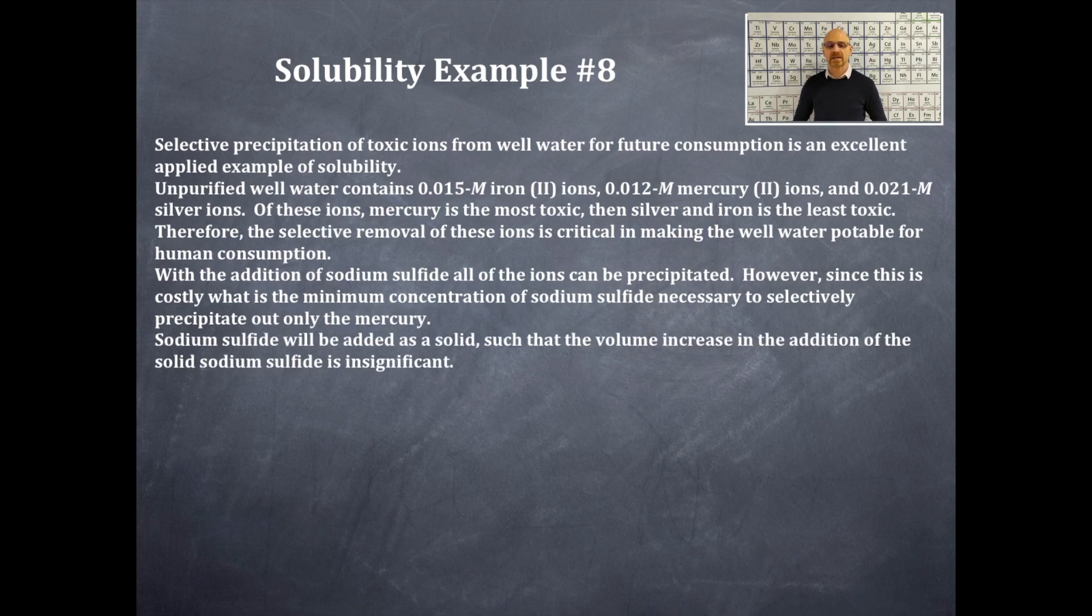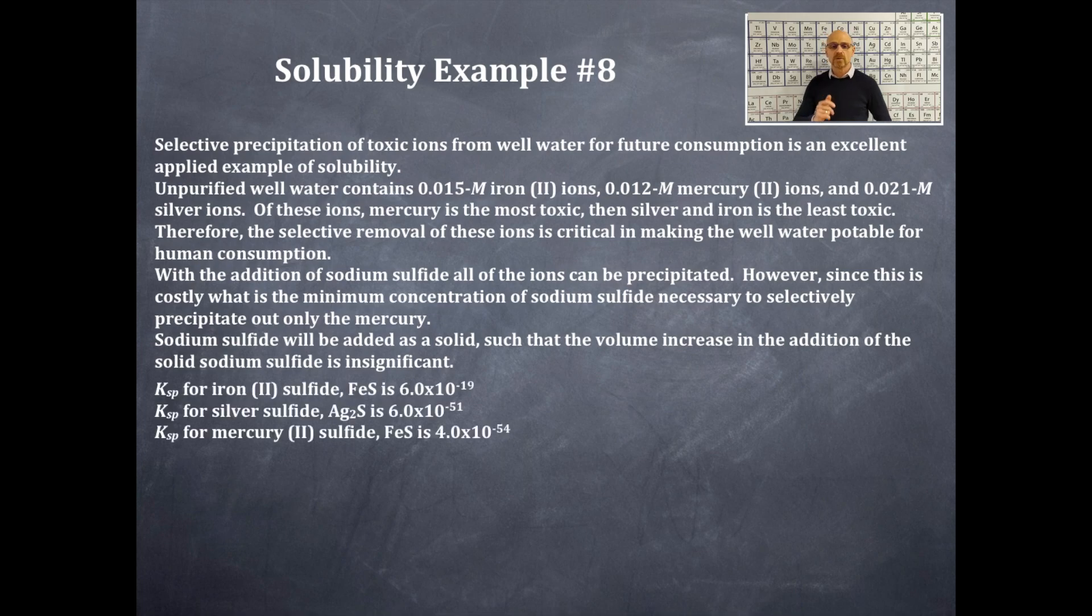Sodium sulfide will be added as a solid. And as such, that volume increase with the addition of the solid of sodium sulfide is insignificant, so we do not need to add that into our calculations. What we can get from the back of your textbook in the appendix or the Handbook of Chemistry and Physics is the following KSP values for iron sulfide at 6.0 times 10 to the negative 19. For silver sulfide, 6.0 times 10 to the negative 51. For mercury 2 sulfide, 4.0 times 10 to the negative 54.